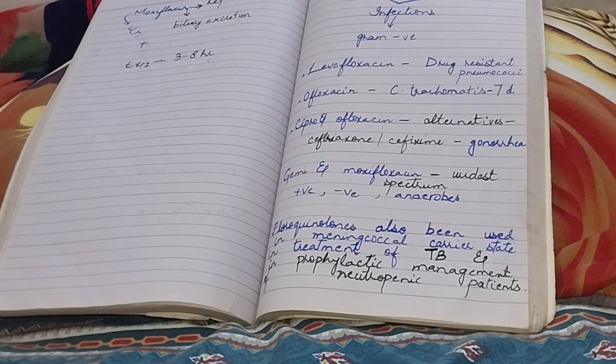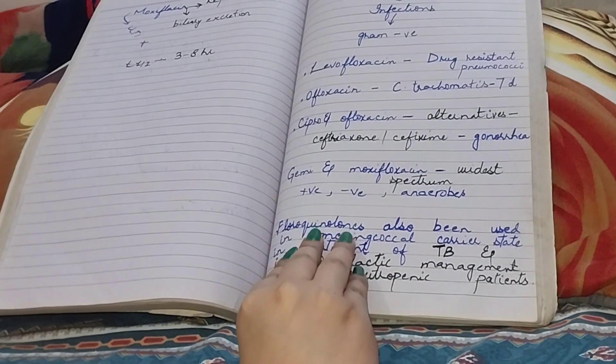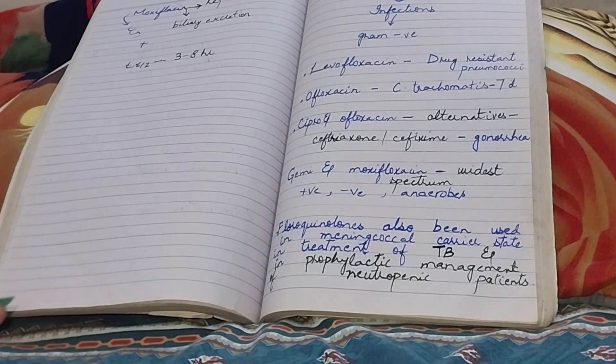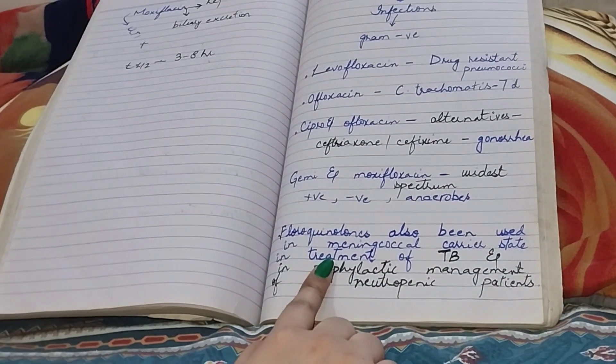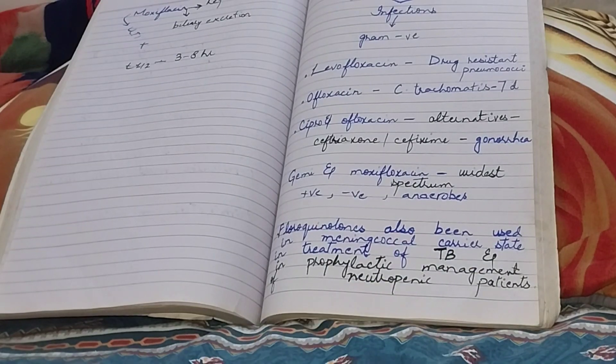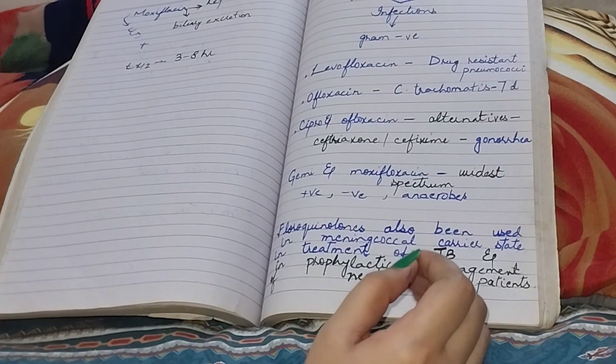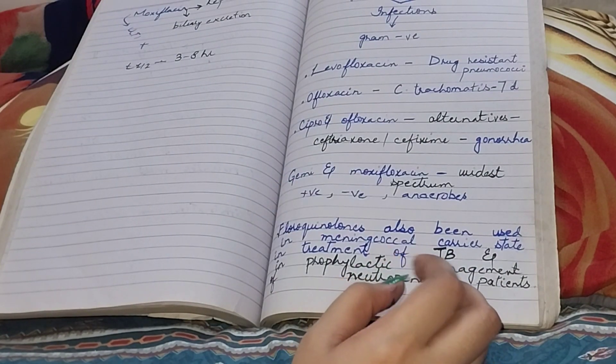Fluoroquinolones have also been used in meningococcal carrier state, in the treatment of TB, and they are also used in prophylactic management of neutropenic patients.